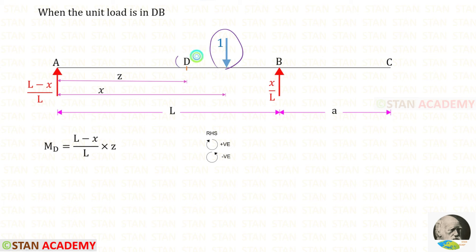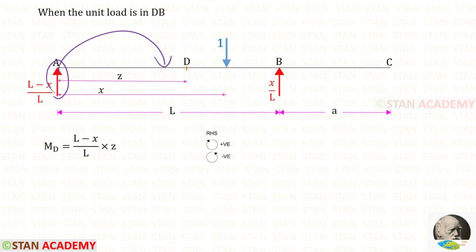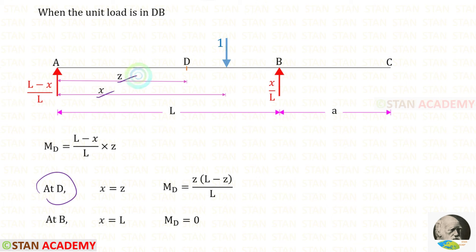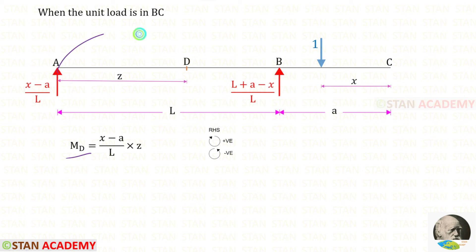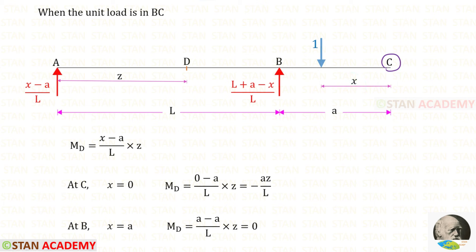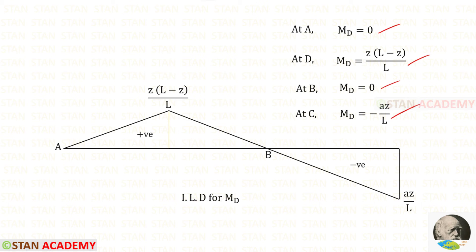Now let us keep the unit load between D and B. To find MD, we use the right hand side rule. RA is acting in the clockwise direction so it will be positive and the distance is Z. At point D, x equals Z, so MD equals Z(L minus Z) upon L. At point B, x equals L, so MD equals 0. Now let us keep the unit load between B and C at a distance of x from C. RA is acting in the clockwise direction so it is positive and the distance is Z. At point C, x equals 0, so MD equals minus AZ upon L. At point B, x equals A, so MD equals 0. Using these four values, we can draw the ILD for MD.